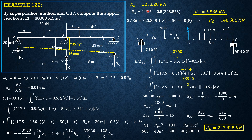The remaining reactions are computed by statics in the same manner as before. Sum moments about C to solve for RA, then summation of vertical forces to solve for RC, or sum moments about A to get RC directly. Then check that summation of vertical forces equals zero for verification. That completes this problem.